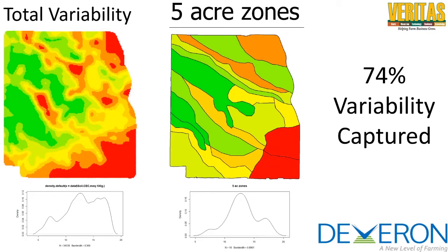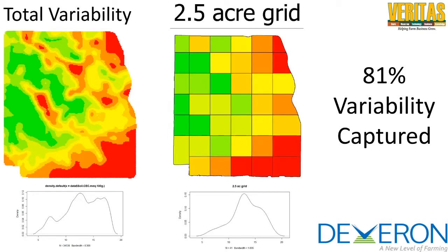Depending on how you make your zones, you might be able to capture more of that variability. That's the cool part about this tool — you can figure out the best way to invest in soil sampling. Do you want to soil sample every 25 acres or every 5 acres? Do you want to use grids or polygons and zones? You can send us your field boundary and we can do this with your yield data or imagery, even before you make that investment on soil sampling. If you want to spend a little more, you can go up to a 2.5-acre grid, getting variability capture up to 81%, though obviously twice as many soil samples means the price goes up.